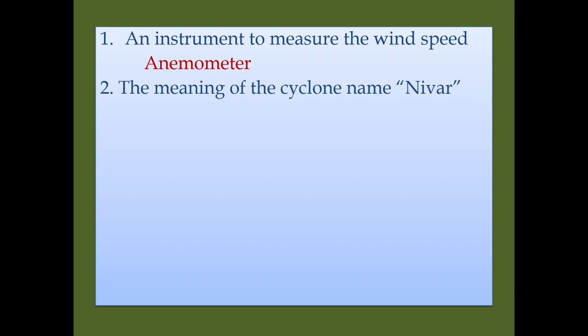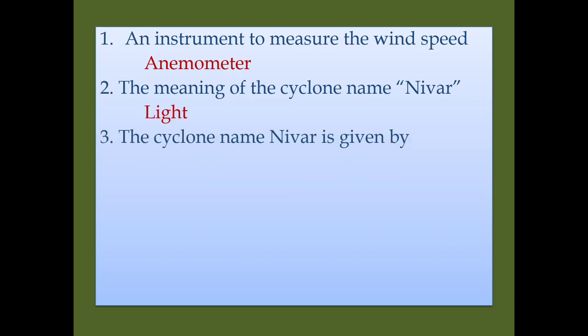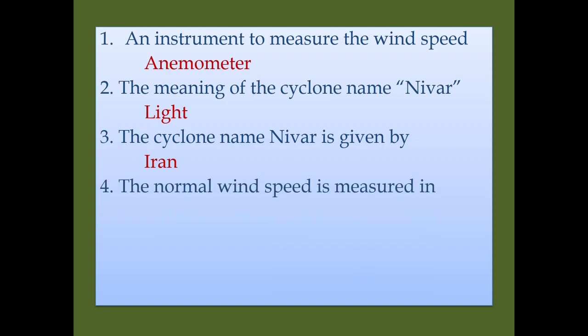The meaning of the recent cyclone Nivar is 'light,' and the name Nivar was given by the country Iran. The normal speed of wind is measured in knots.